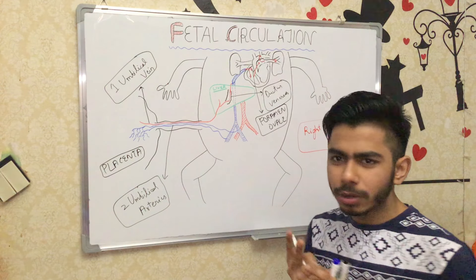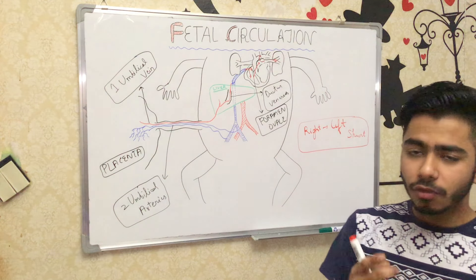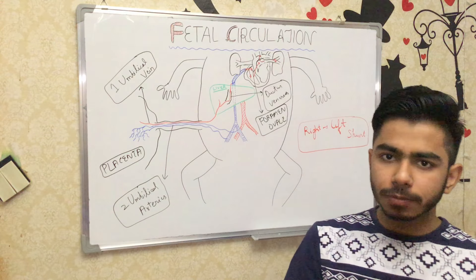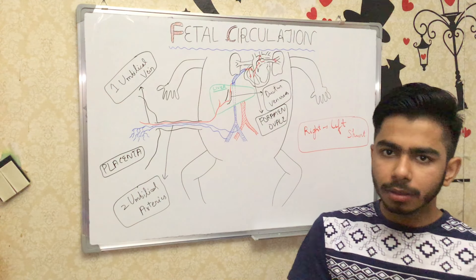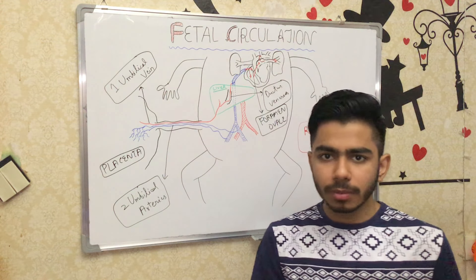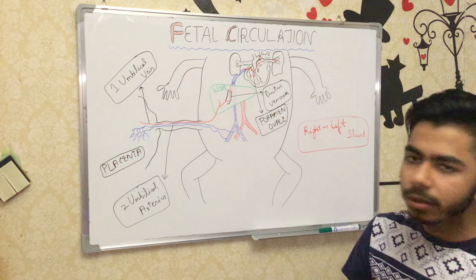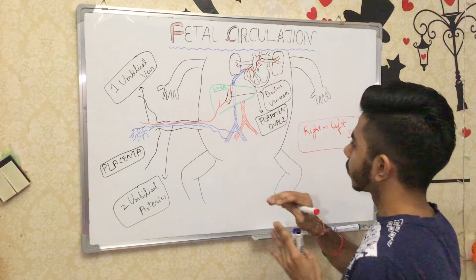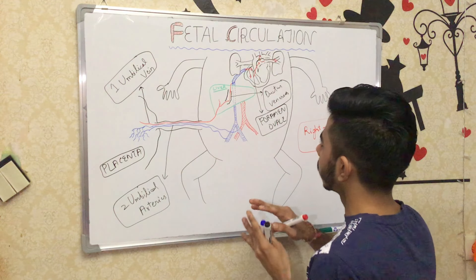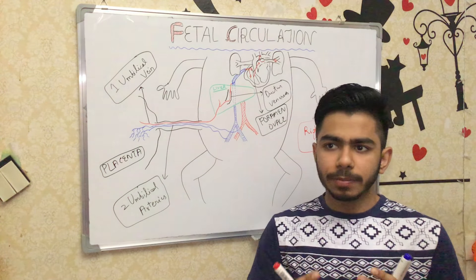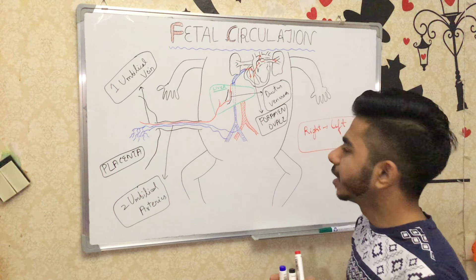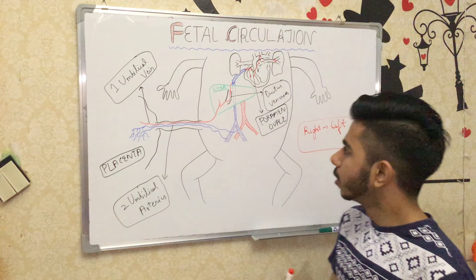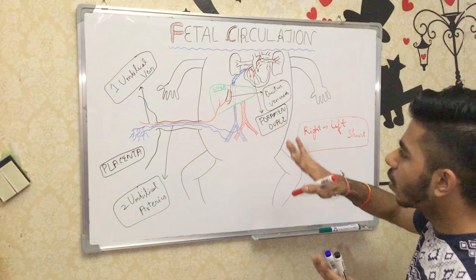So these are the two important special structures in fetal circulation: the foramen ovale and the ductus arteriosus. Together they help the fetus carry oxygenated blood to its tissues by bypassing the non-functional pulmonary circulation.